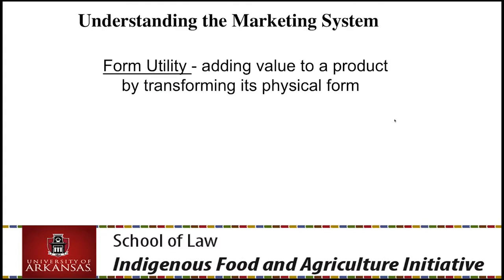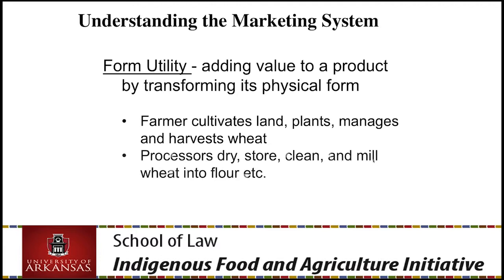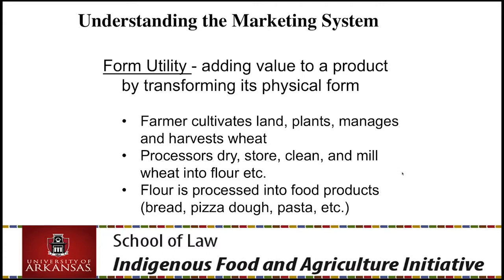Let's start with form utility: adding value to a product by transforming its physical form. Using wheat as an example — the farmer cultivates, plants, manages, and harvests the wheat. Once combined, it's still in the kernel with the husk around it. Processors dry, store, clean, and mill wheat into flour. Then the flour can be processed into food products: bread, pizza dough, pasta, and so forth. The type of wheat determines the end product.